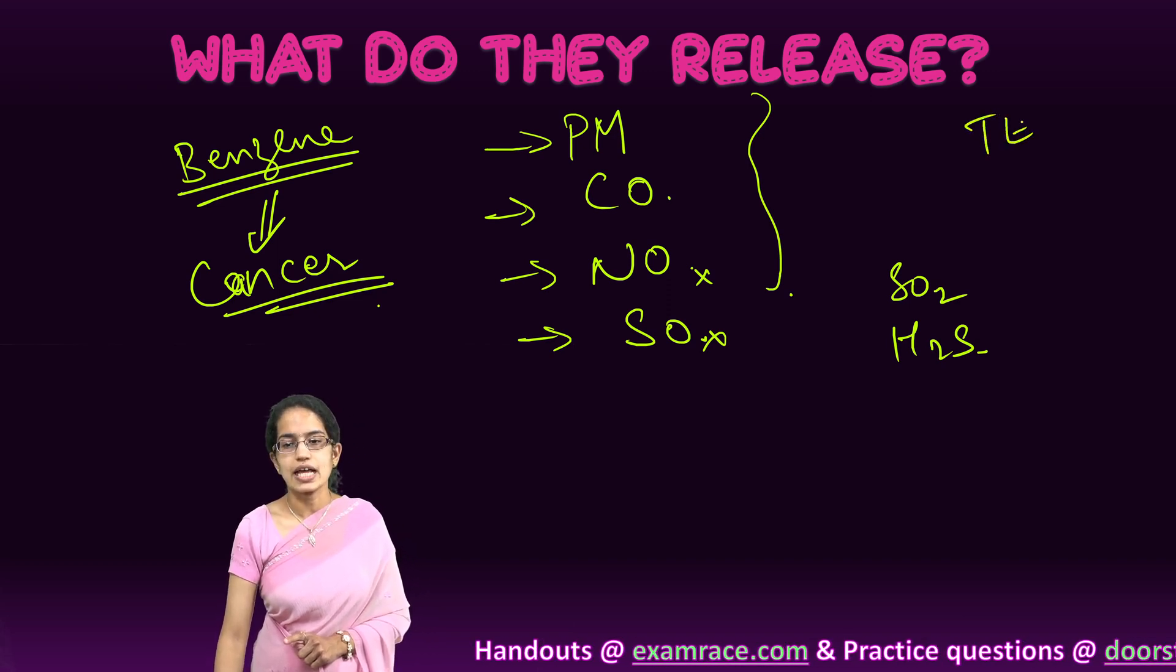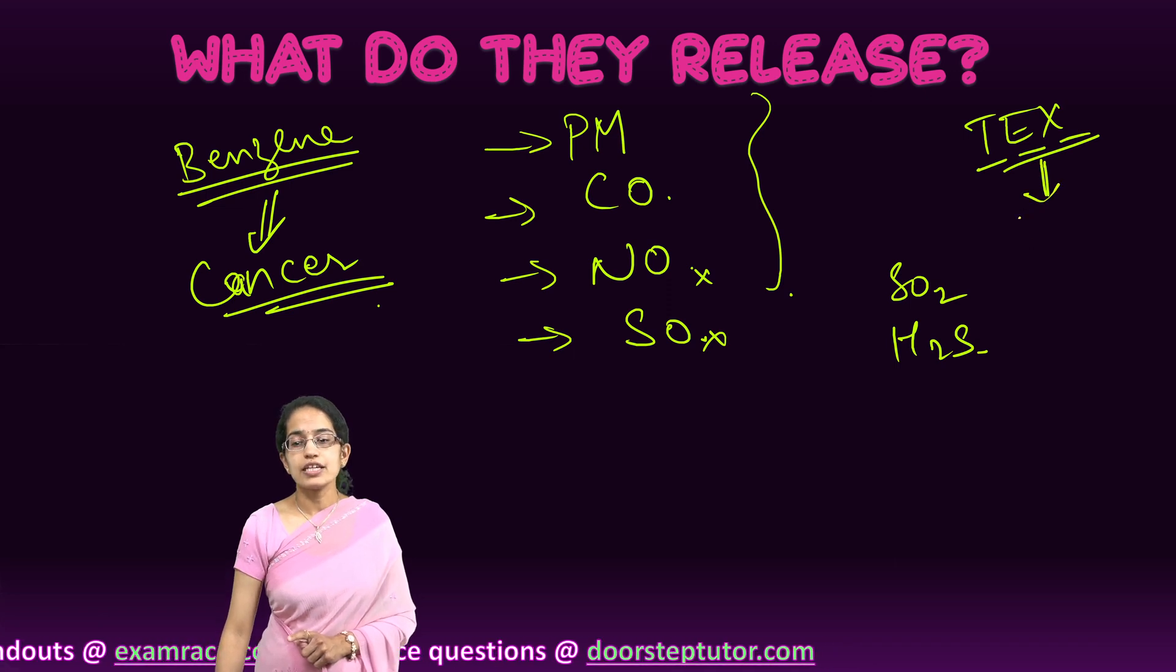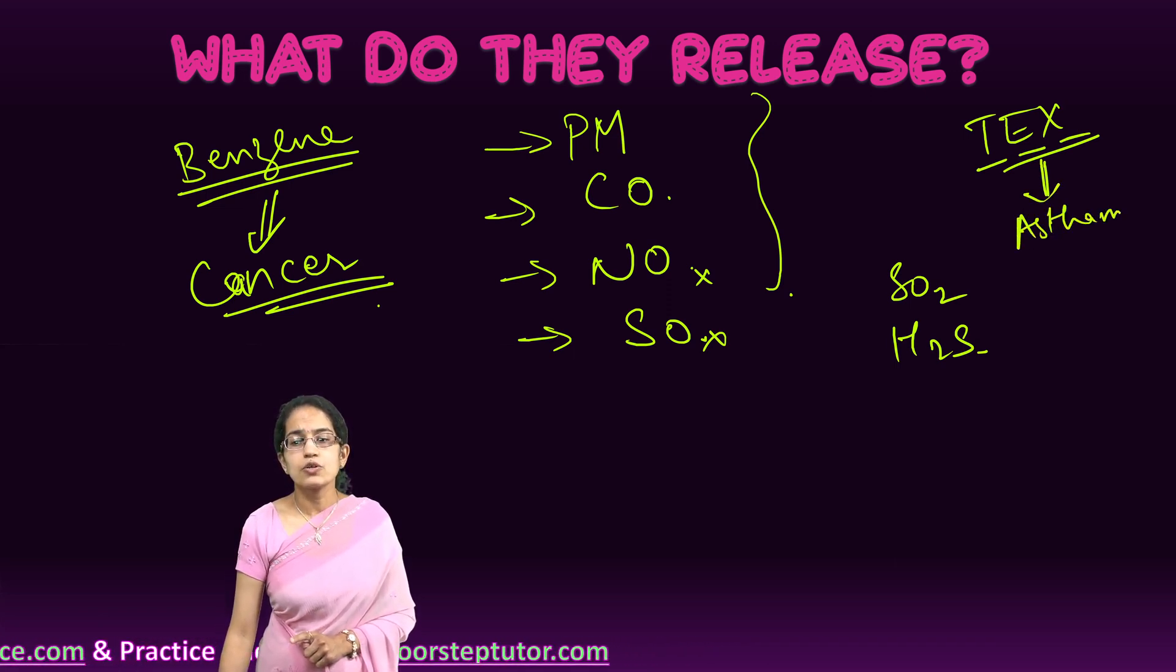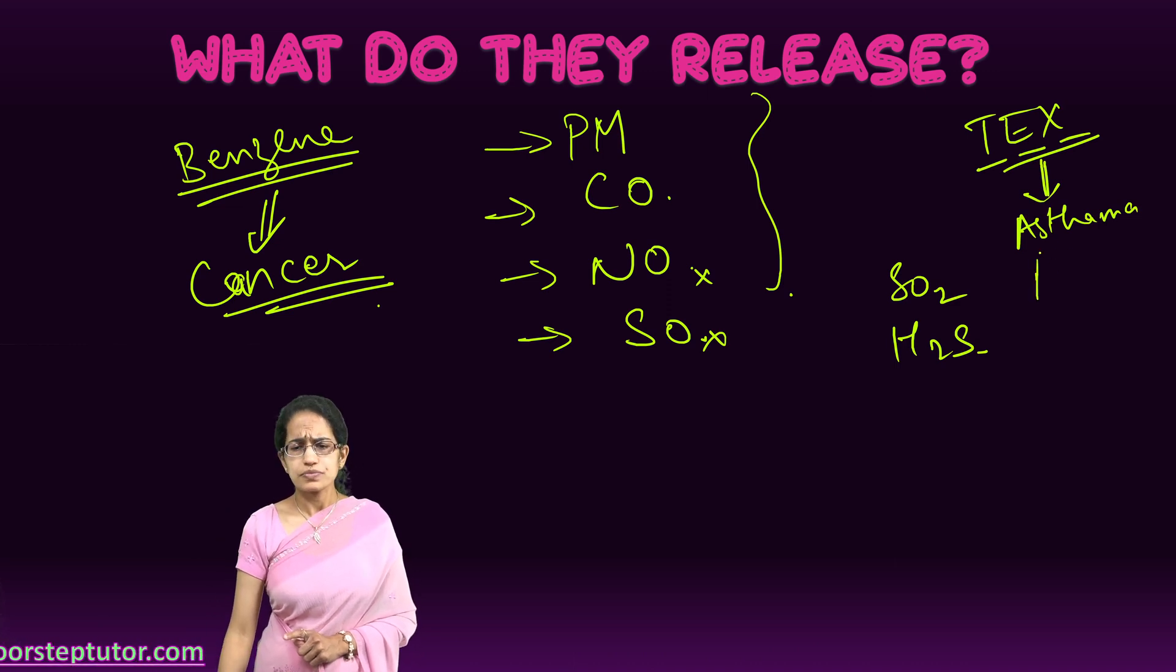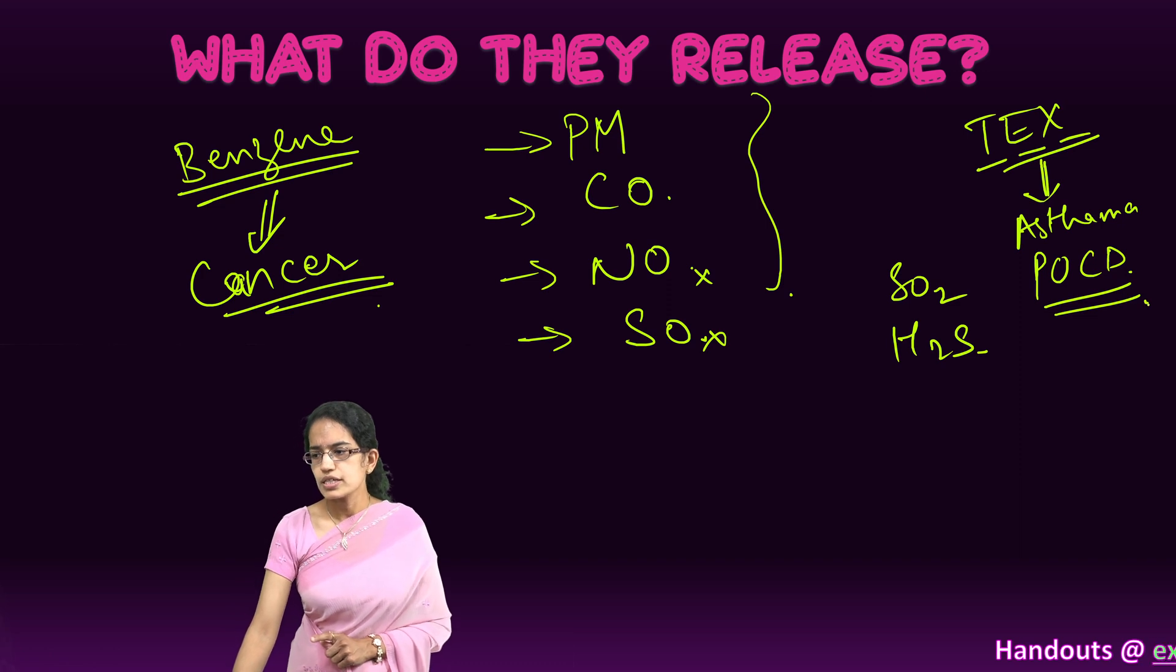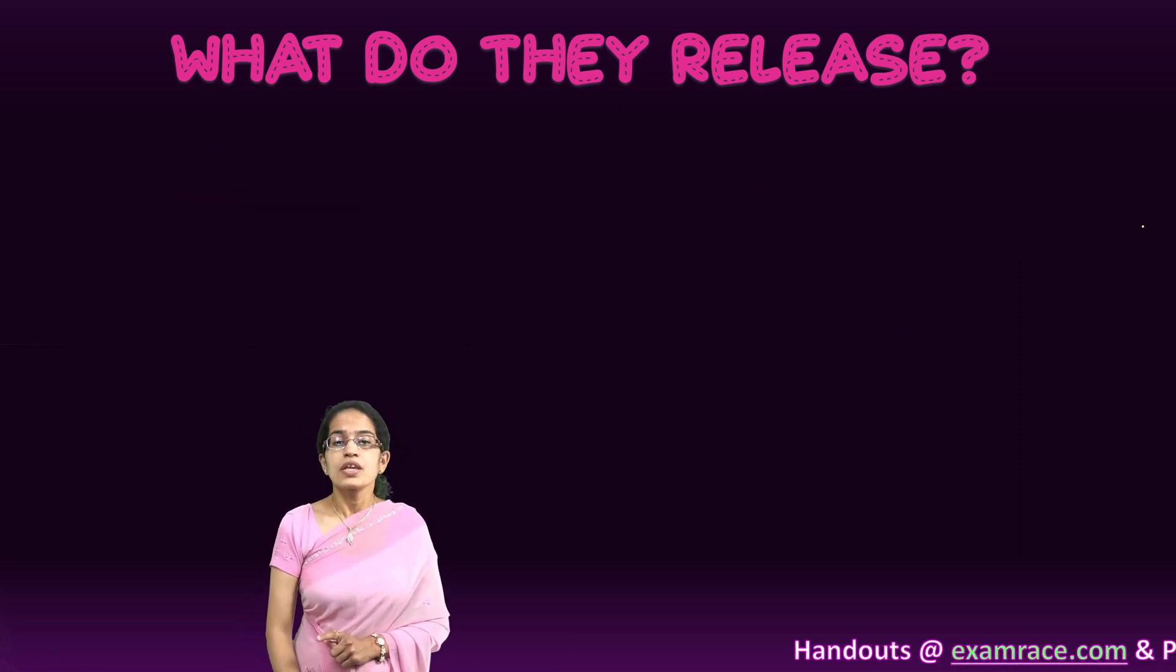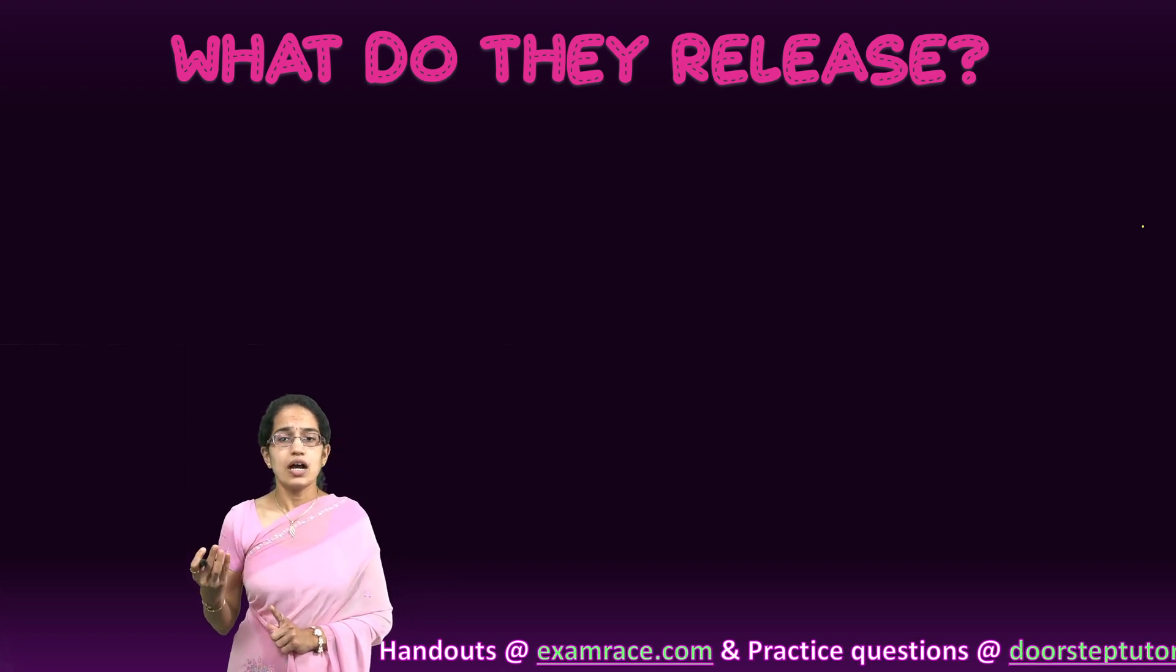However, T-X, that is the toluene, ethylbenzene, and xylene, are related mainly to asthma, related to PCOD, that is the pulmonary obstruction disorder. So those are common disorders that are seen with the compounds which are benzene mainly.